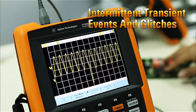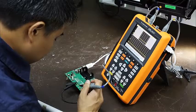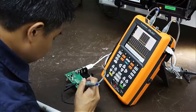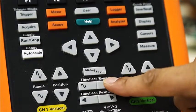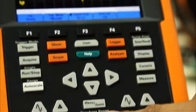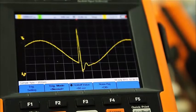Intermittent transient events and glitches are among the greatest challenges in electronic circuitry troubleshooting. To capture glitches, you would need high sampling rate for better resolution to see intermittent events.